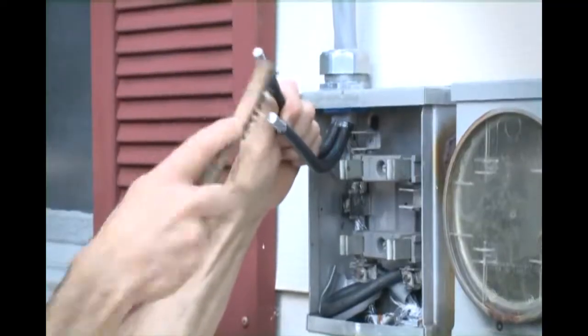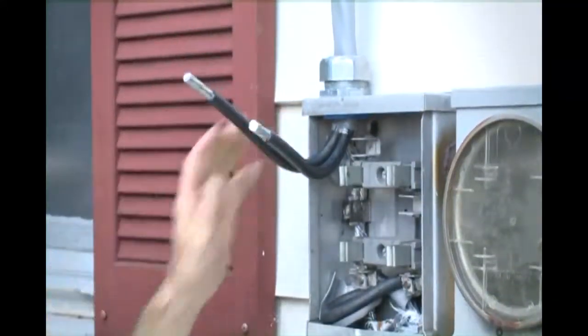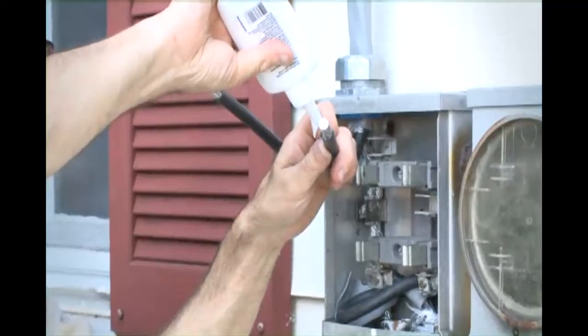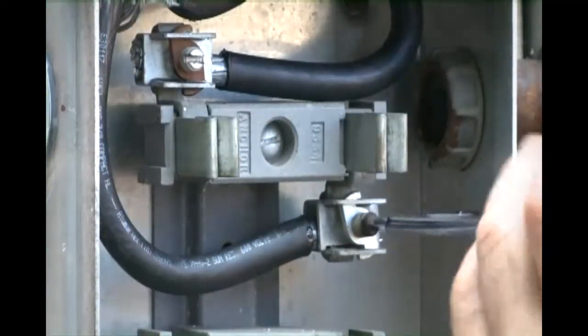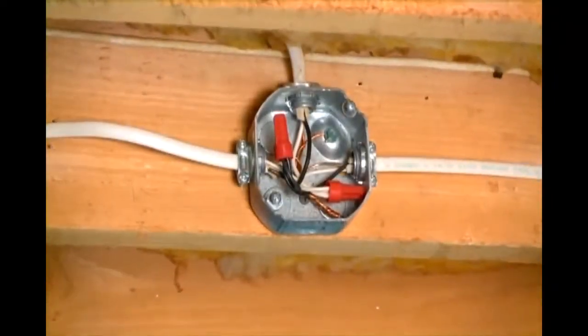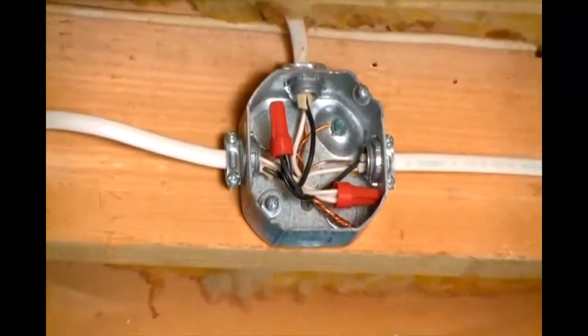After connecting the neutral, clean the hot conductors with a wire brush and then apply an antioxidant compound. Finally, attach the conductors to the lugs and tighten securely.